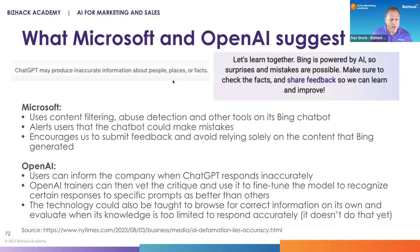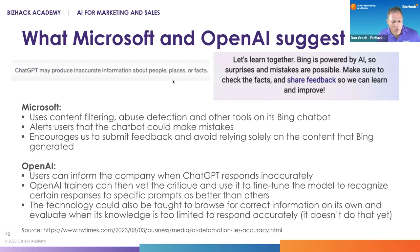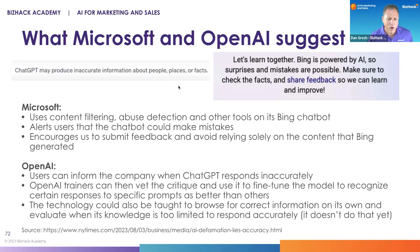OpenAI says something similar: tell us when we make a mistake, and our trainers can then train AI to not make that kind of mistake. In the future, they will basically teach the AI generators to fact-check their responses — but that's not today, that's eventually.